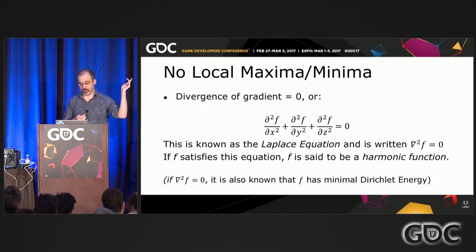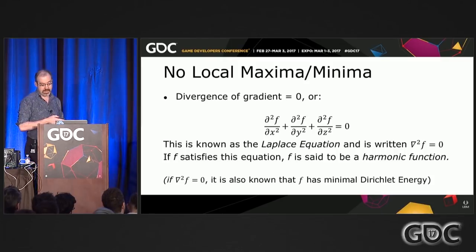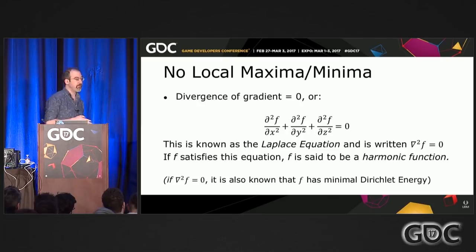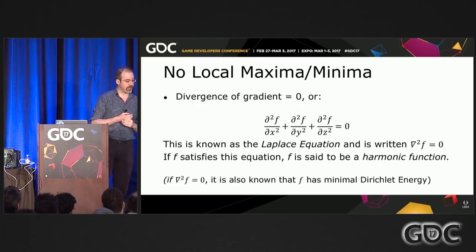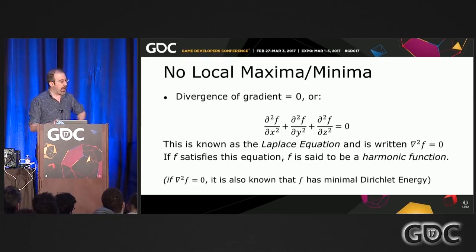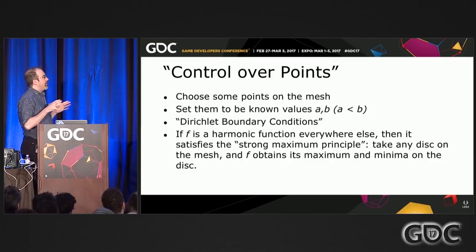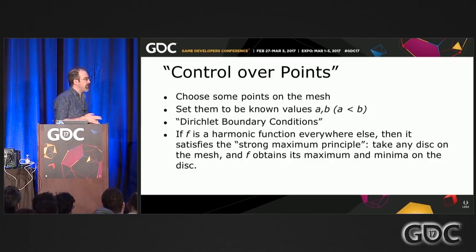Trivially, if the Laplacian is zero and we integrate it, that Dirichlet energy integral is going to be a constant. A constant function also trivially minimizes the Dirichlet energy because the gradient everywhere is zero. By itself, Dirichlet energy is boring. The Laplacian is fairly boring. Where it gets exciting is if we do the following.